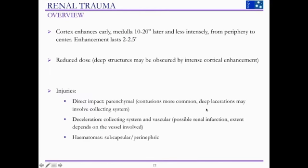For renal trauma, two key things to remember when scanning the kidneys: first, you need a reduced dose because of very heavy arterial enhancement — deeper structures may be obscured by the intense cortical enhancement. Second, CEUS contrast does not get excreted through the renal collecting system, so you will not be able to depict injuries to the pelvicalyceal system. You can get injuries from direct impact resulting in parenchymal injuries, or from deceleration normally resulting in collecting system and vascular injuries, or hematomas.